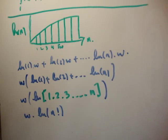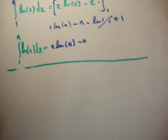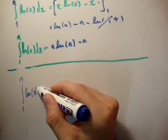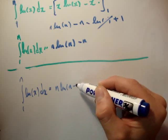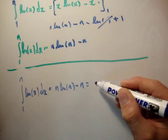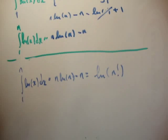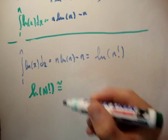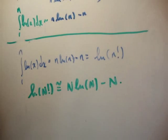So the whole point of this is we can now make Stirling's approximation. The integral from 1 to n of the natural logarithm of x dx equals n·log(n) minus n, which equals the natural logarithm of n factorial. So from now on, if you see the natural logarithm of n factorial, you should immediately write down that it's approximately n·log(n) minus n — in the limit of large numbers.